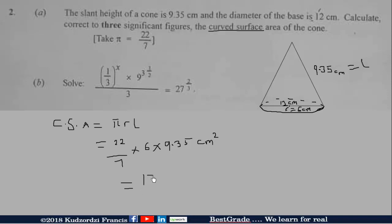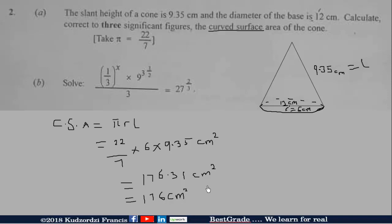Multiplying these gives us 176.3 to two decimal places. Rounding to 3 significant figures — counting 1, 2, 3 — we get 176 cm². So the curved surface area of the cone to 3 significant figures is 176.3 centimeters squared.